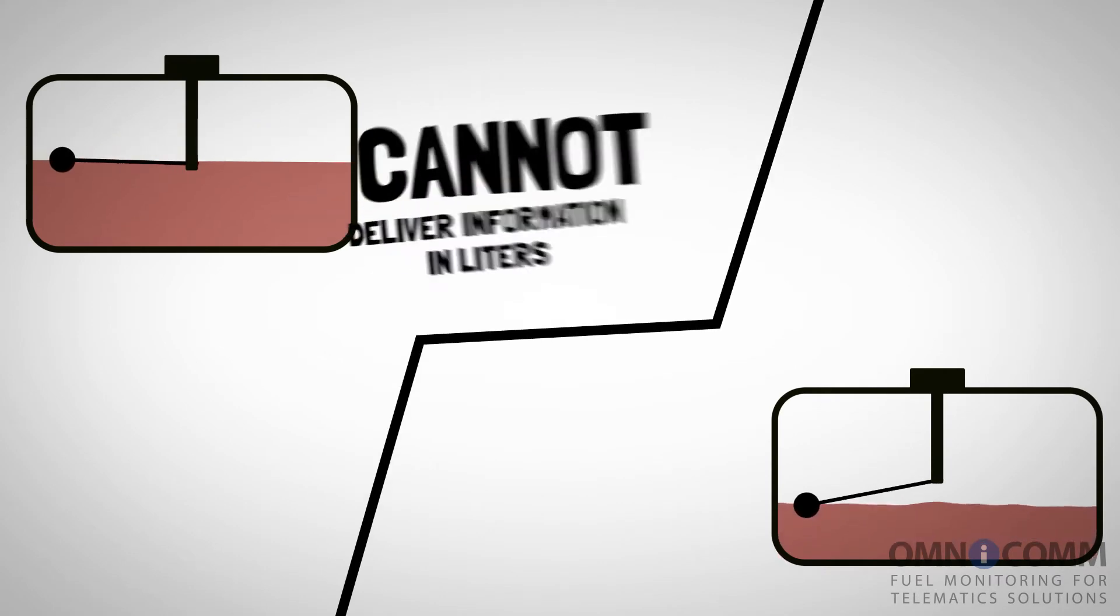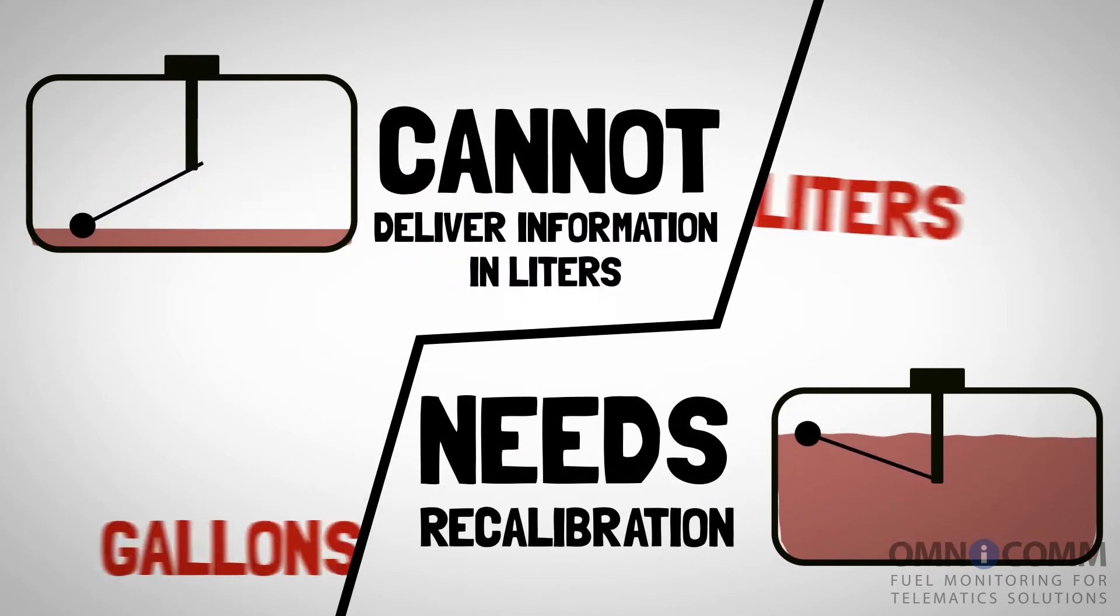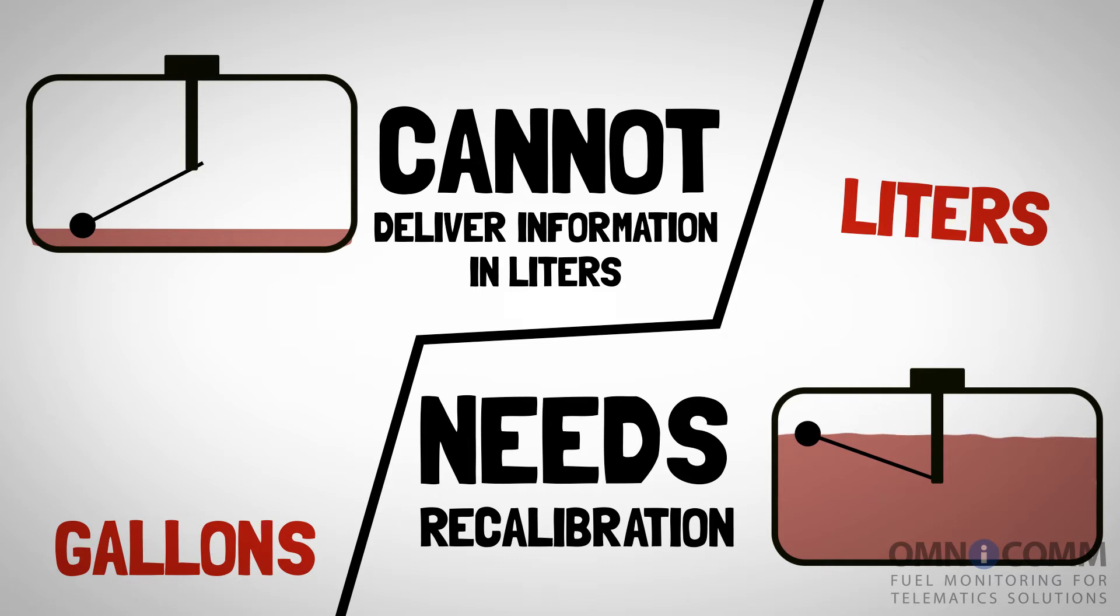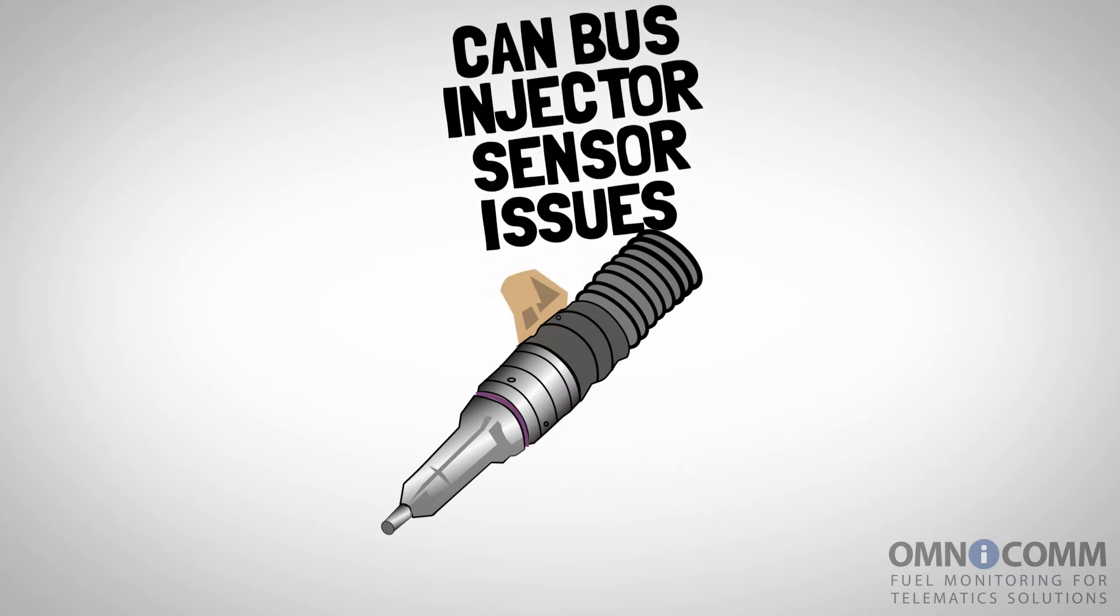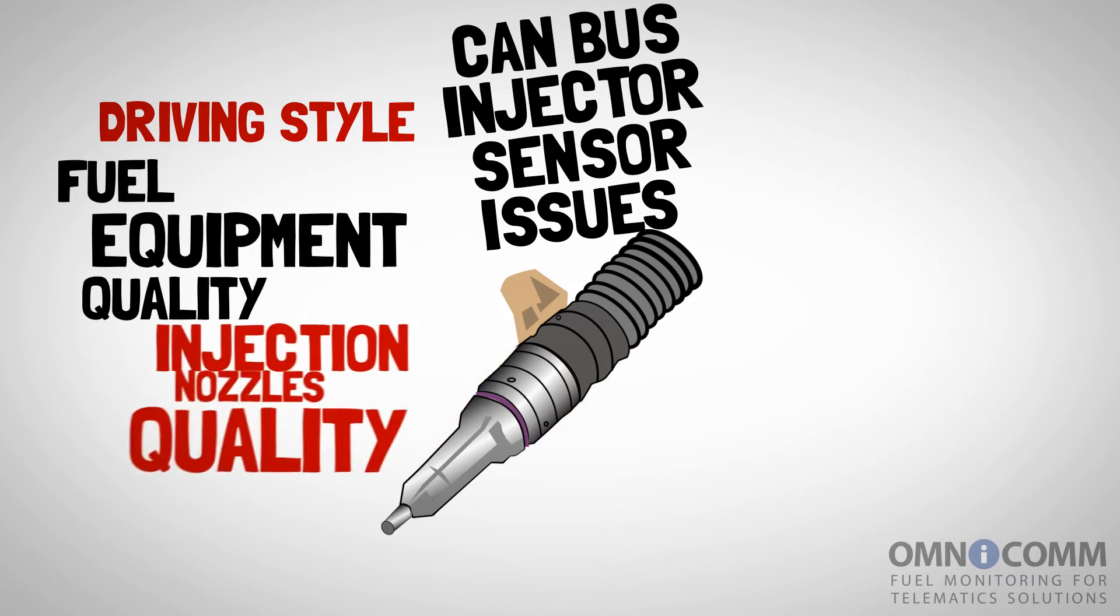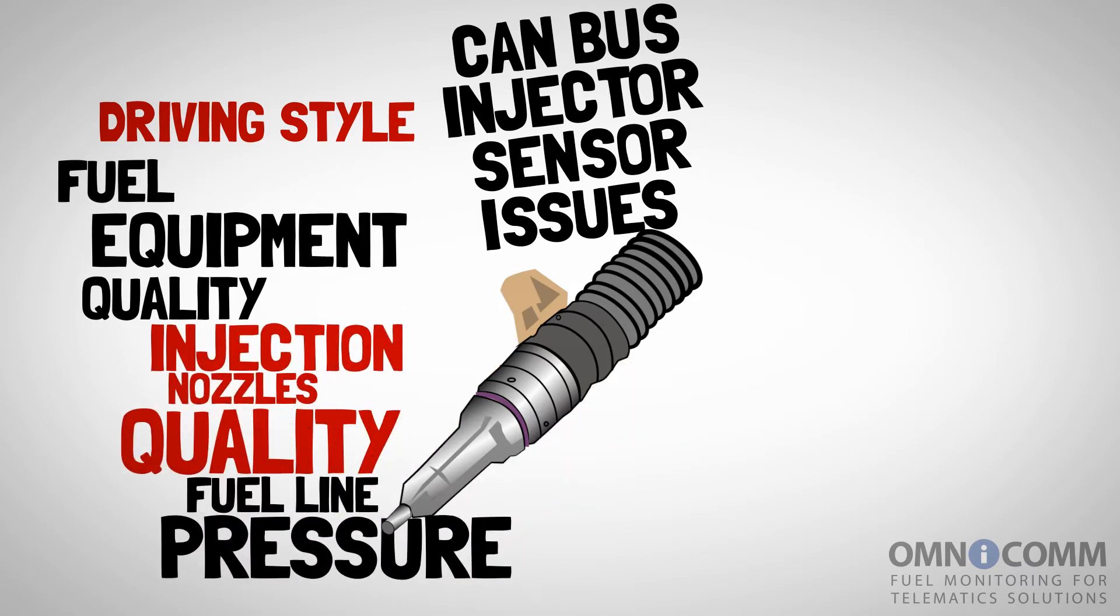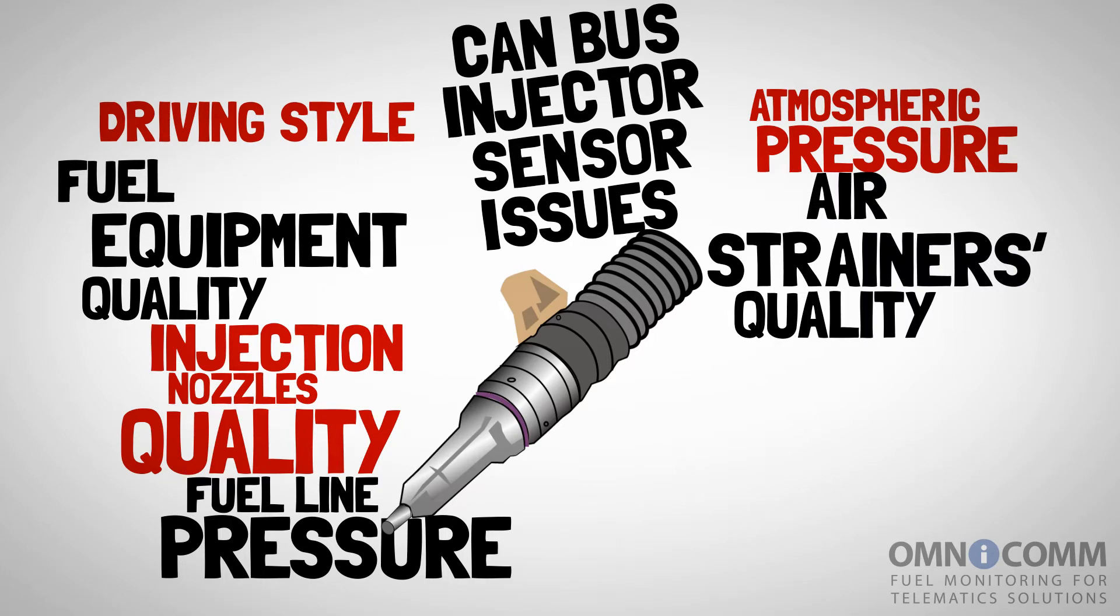Plus, standard float-type sensors cannot deliver information in liters. In order to get liter-based data, it is essential to calibrate fuel tanks. The accuracy of CAN Bus Injector Sensors is easily undermined by multiple factors, such as driving style, fuel equipment quality, injection nozzles quality, fuel line pressure, atmospheric pressure, air strainers quality, fuel viscosity, and others.